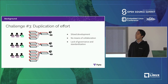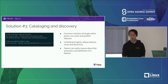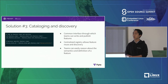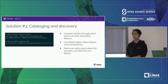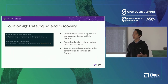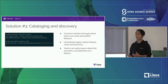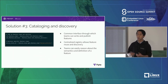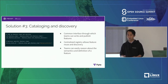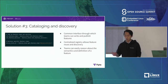For the duplication of effort problem, Feast provides a common interface through which different teams can write and publish their features. Once published, features are written to a central repository that all teams can query and browse — enabling easy feature discovery and reuse. A UI for easy discovery is something the team would like to build so that users can scroll through hundreds of features defined by other teams.